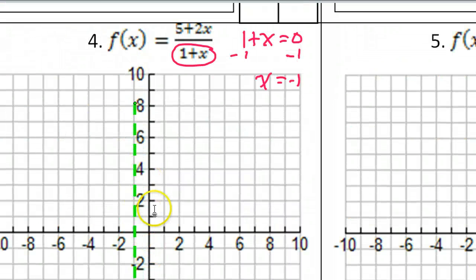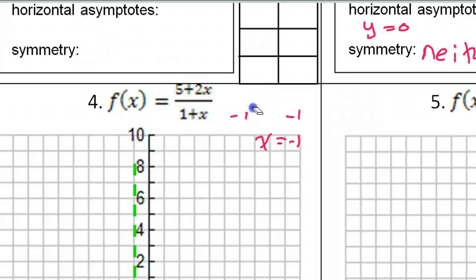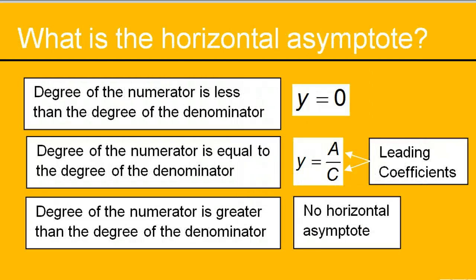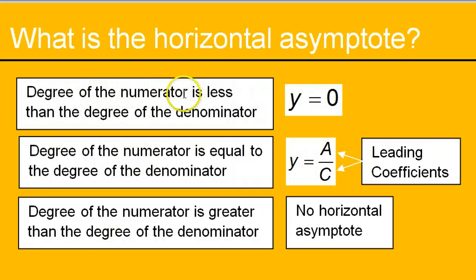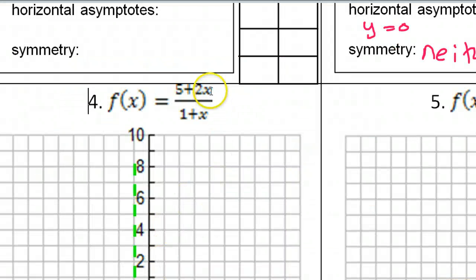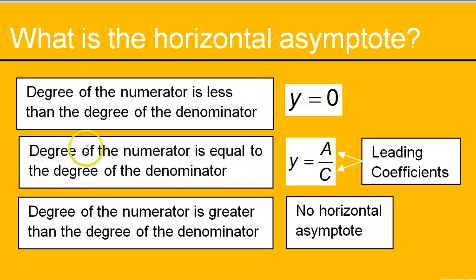Now, the horizontal asymptote — that's the one where we have to ask ourselves about the degree. We ask: is the degree of the numerator less than, equal to, or greater than the denominator? That helps us decide what the horizontal asymptote is. In this case, the numerator has degree one because it's just x — it's linear. The denominator also has degree one. So this is the situation where the two degrees are equal.